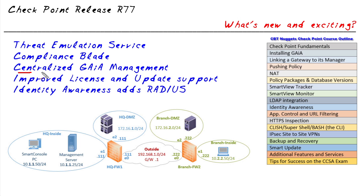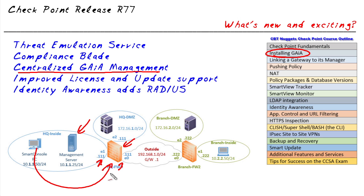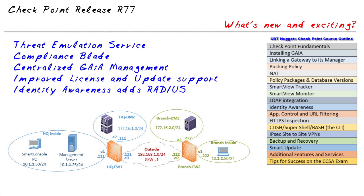Another really cool feature is centralized Gaia management. Gaia is the underlying operating system running on our gateways and the management platform. Previously, to change an IP address, DNS, or other gateway details, you'd have to open a web browser directly to that gateway. New with R77, you can now do that through SmartDashboard, eliminating the need for a direct session to each gateway — which in a large environment saves a lot of time. They've also made licensing and updates more seamless and transparent, reducing the administrator time needed to perform updates.